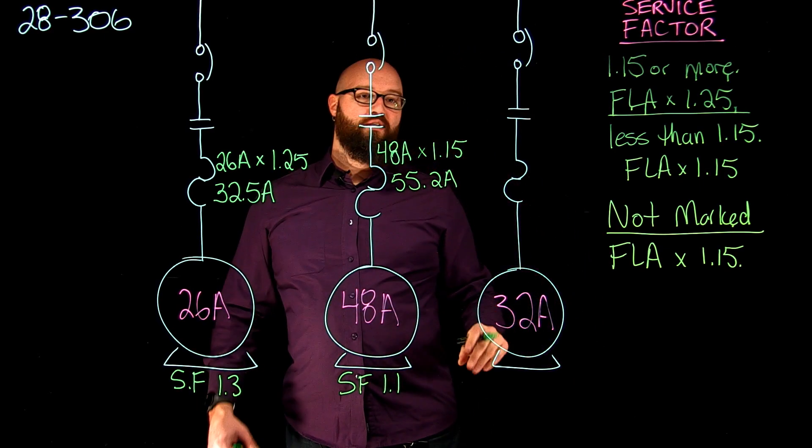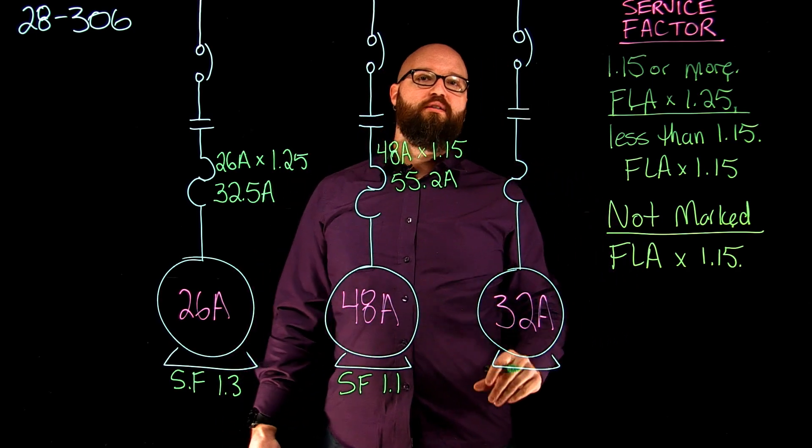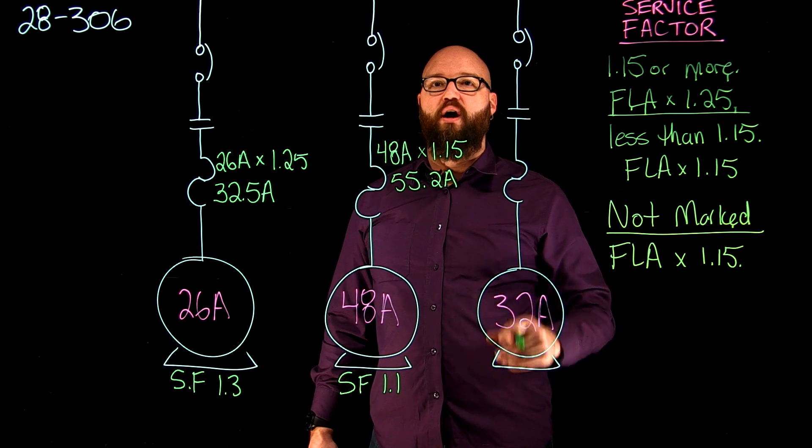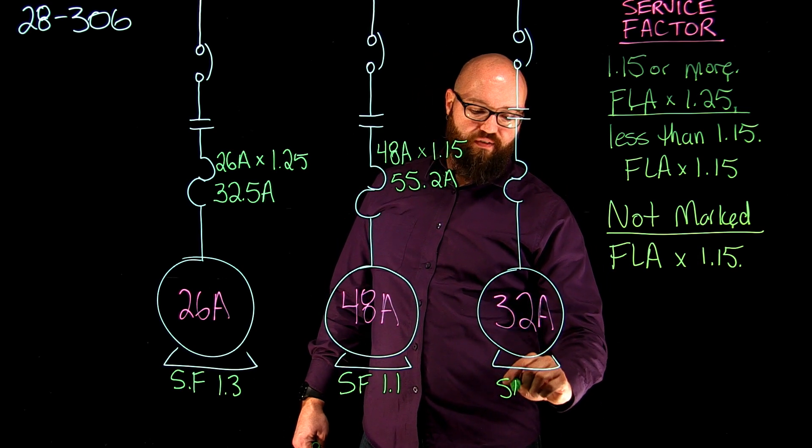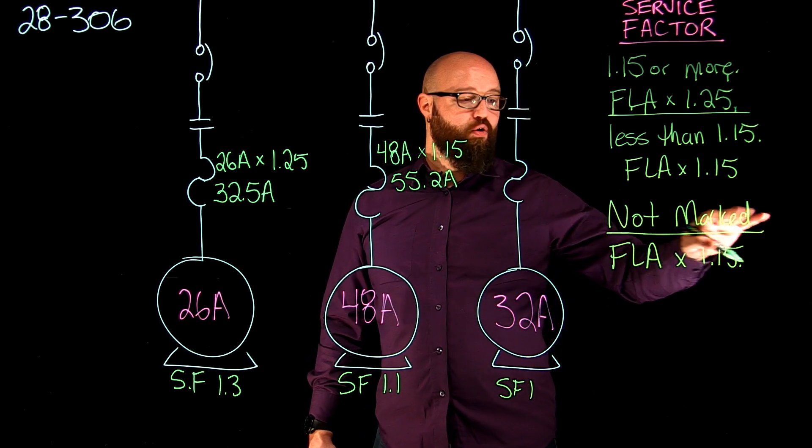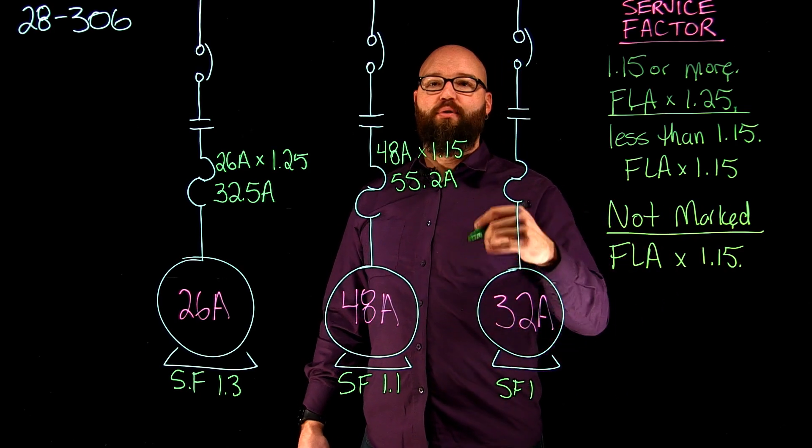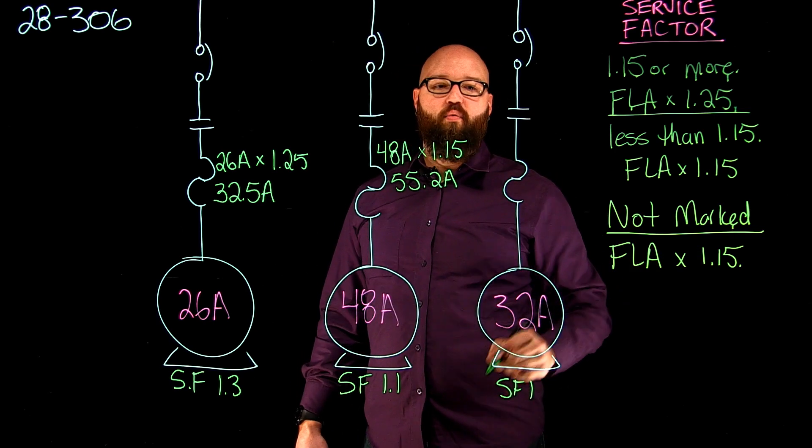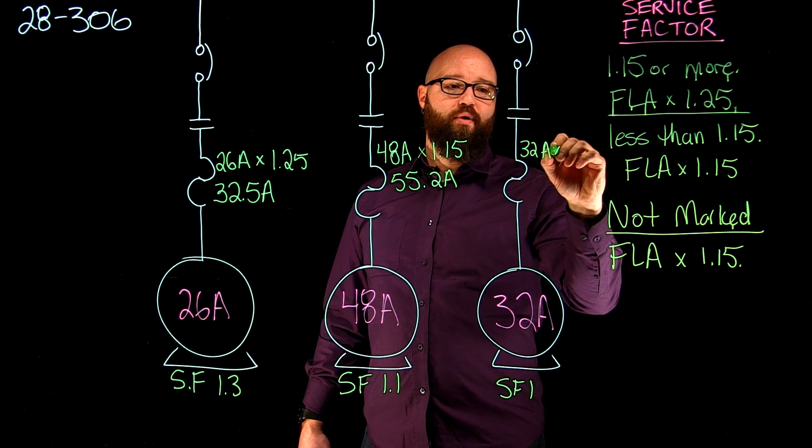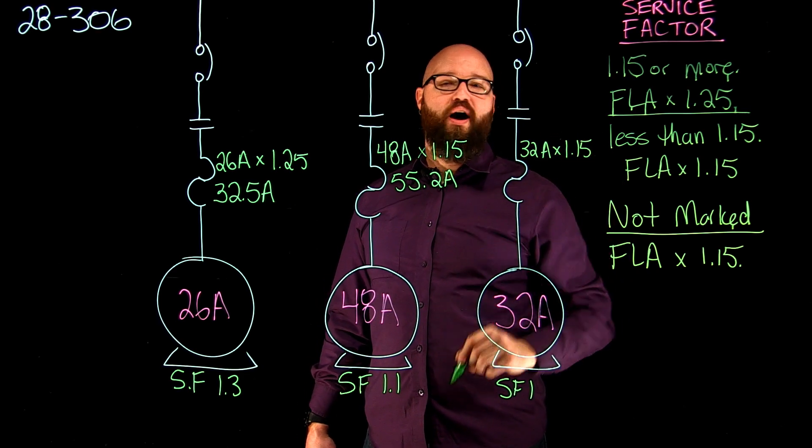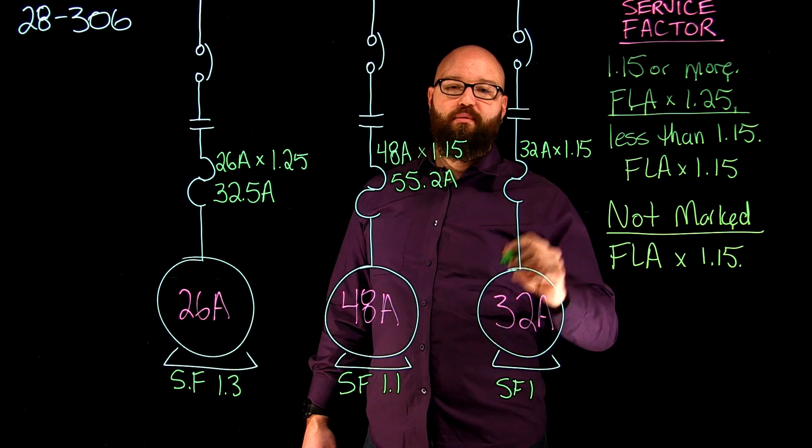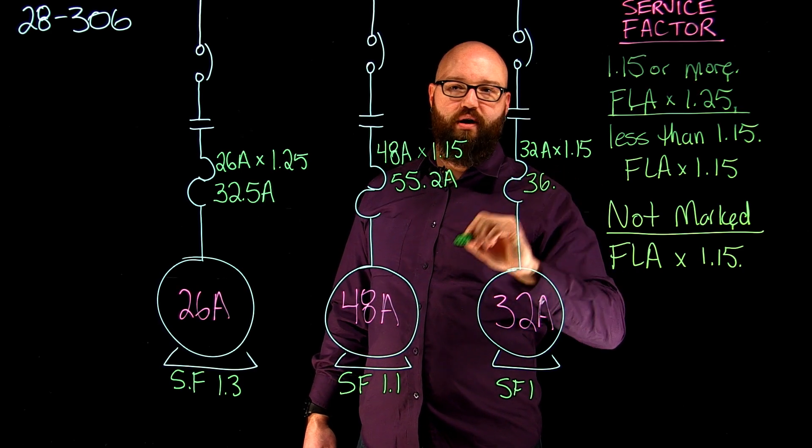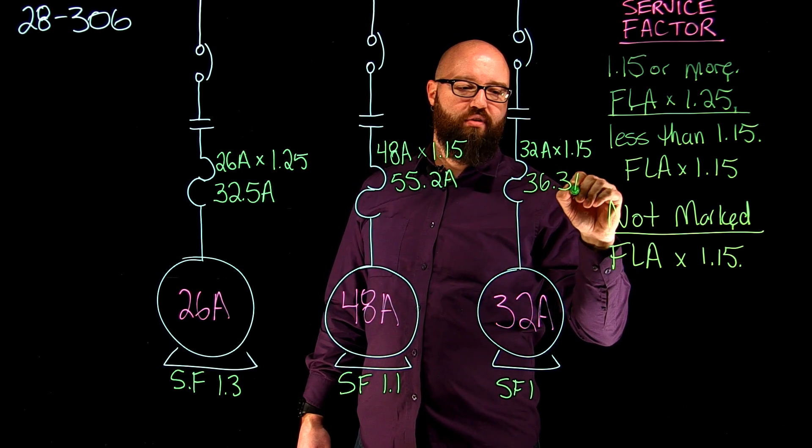Our third motor does not have a service factor marked. So again, as mentioned here, if it's not marked we're going to assume a service factor of 1. If I have a service factor of 1, it falls into the category of under 1.15, so we would apply the same percentage multiplier that we did for our service factor of 1.1. So we're going to take our 32 amps and multiply it by 1.15, which gives us our maximum overload setting of about 36.3 amps.